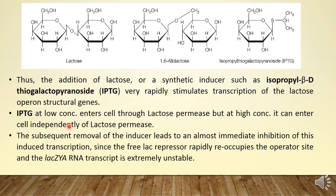IPTG at low concentration enters the cell through permease, but at high concentration it can enter a cell independently of lactose permease — unlike lactose, which requires permease. Upon removal of the inducer molecule, there is immediate inhibition of induced transcription, because the free lac repressor rapidly re-occupies the operator site as soon as the inducer molecule leaves. This is the scenario of negative control where when inducer binds to the repressor, it hampers its activity, frees the operator site, and ultimately proteins are synthesized.